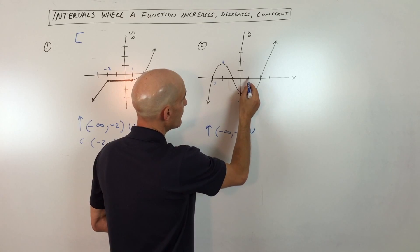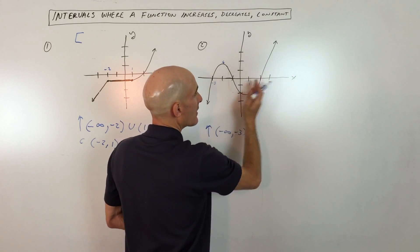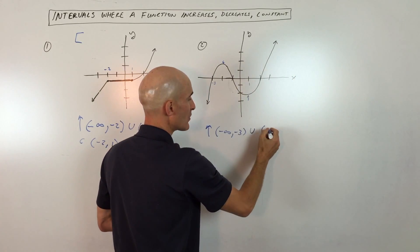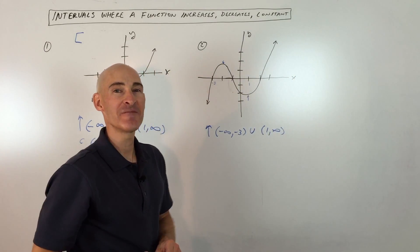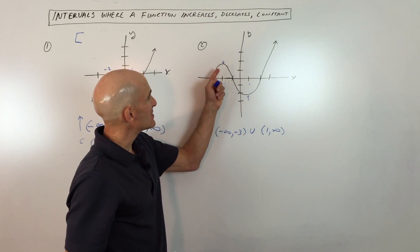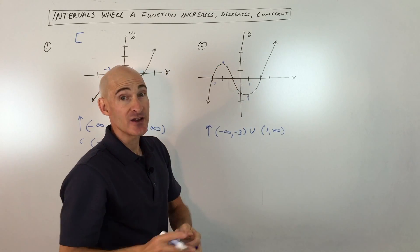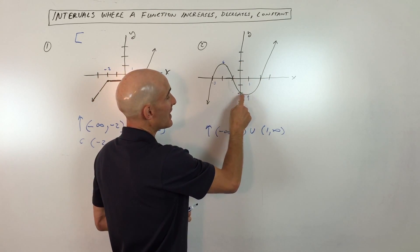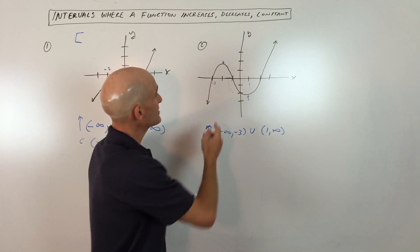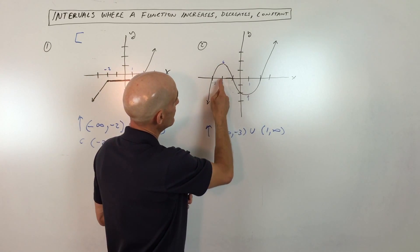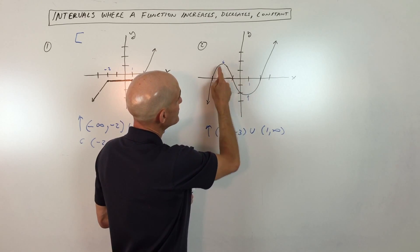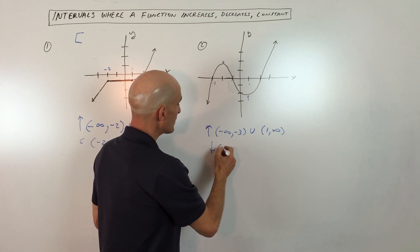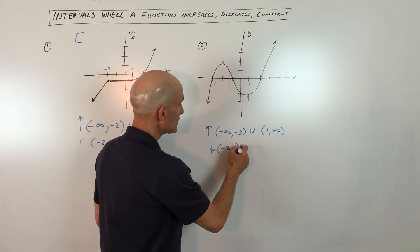It's also increasing from positive one onward. We're looking from left to right, so when x is one to infinity, the graph is going up — so we have one to positive infinity. Now where is it decreasing? Some students make the mistake of saying it's decreasing from positive two to negative two, but those are the y values. You want the x values. So it's decreasing from x equals negative two all the way to x equals positive one. So decreasing from negative two to positive one.